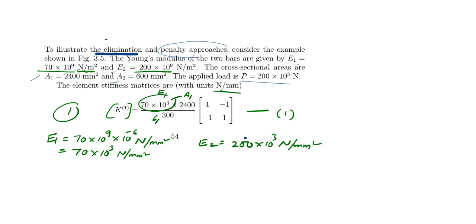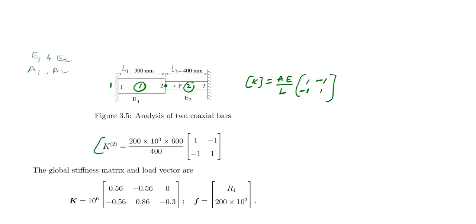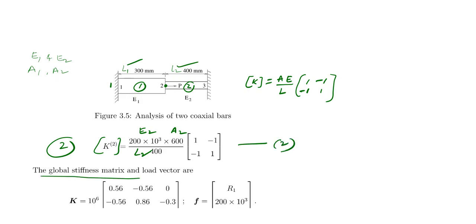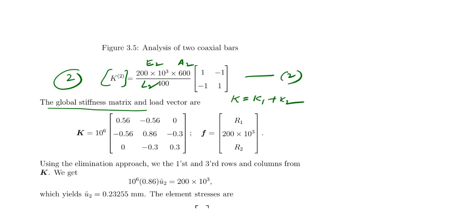This is equation 1. Similarly we go for equation 2 for element 2, using E2 and A2 divided by L2. L2 is 400 and L1 is 300. That is equation 2. After that you have to assemble the global stiffness matrix: K = K1 + K2. I have explained this in separate videos and the link will be in the description, so I won't repeat the assembly procedure here.